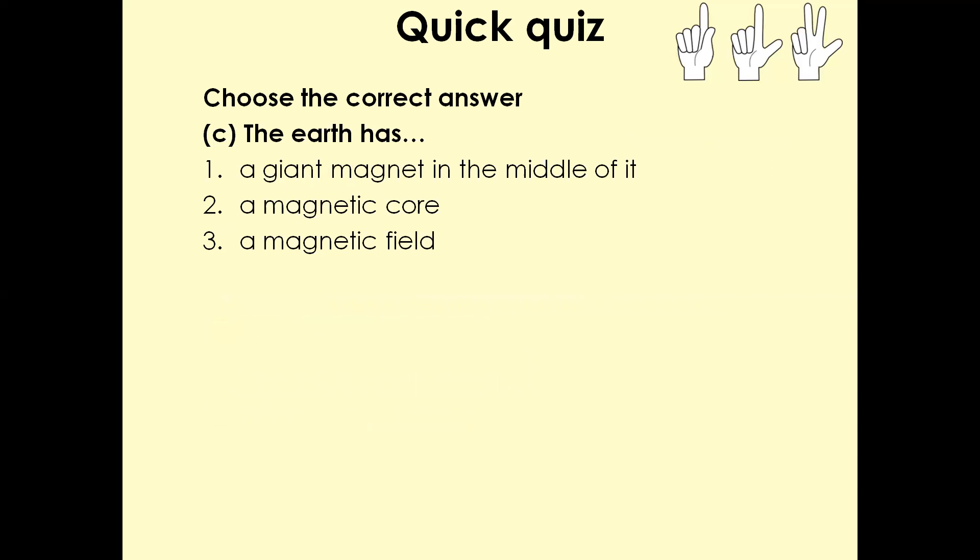Next question. The earth has, the options are a giant magnet in the middle of it, a magnetic core, a magnetic field. Three, two, one. The answer is a magnetic field.